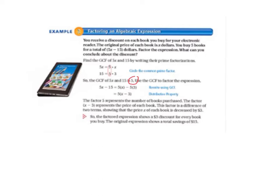So, 5x minus 15 equals 5 times x minus 5 times 3. So, we're just breaking this into parts. So, we rewrote it, and then we're going to use the distributive property. We're going to put 5, that's our greatest common factor, on the outside of the parentheses.